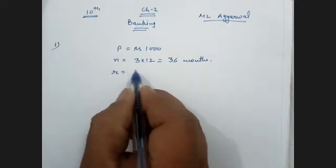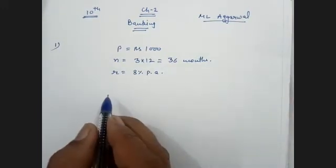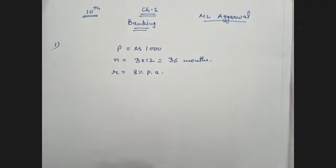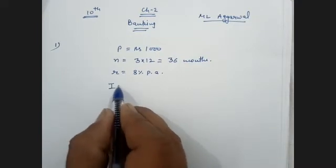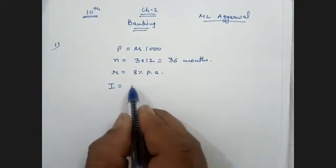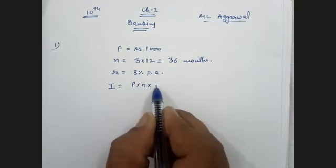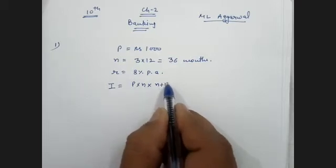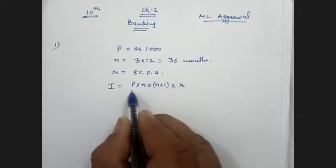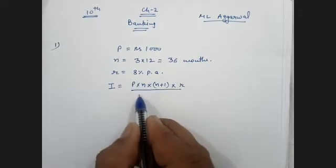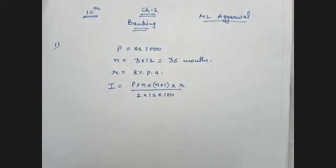The formula for interest is: P into N into (N + 1) into R, upon 2 into 12 into 100. Substituting values: P = 1000, N = 36, R = 8. So interest = 1000 into 36 into (36 + 1) into R, upon 2 into 12 into 100.